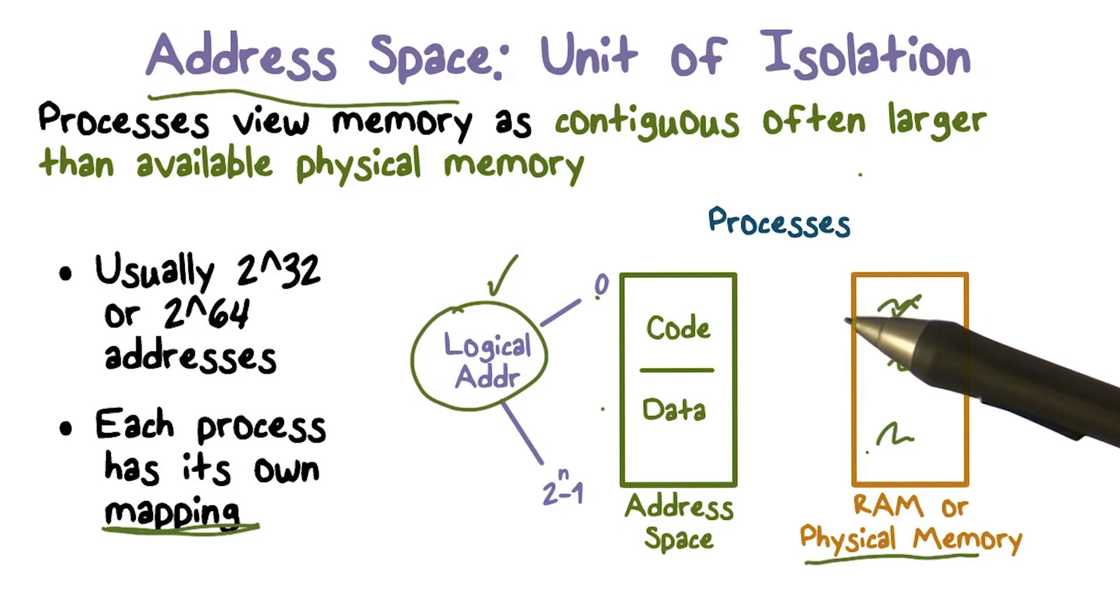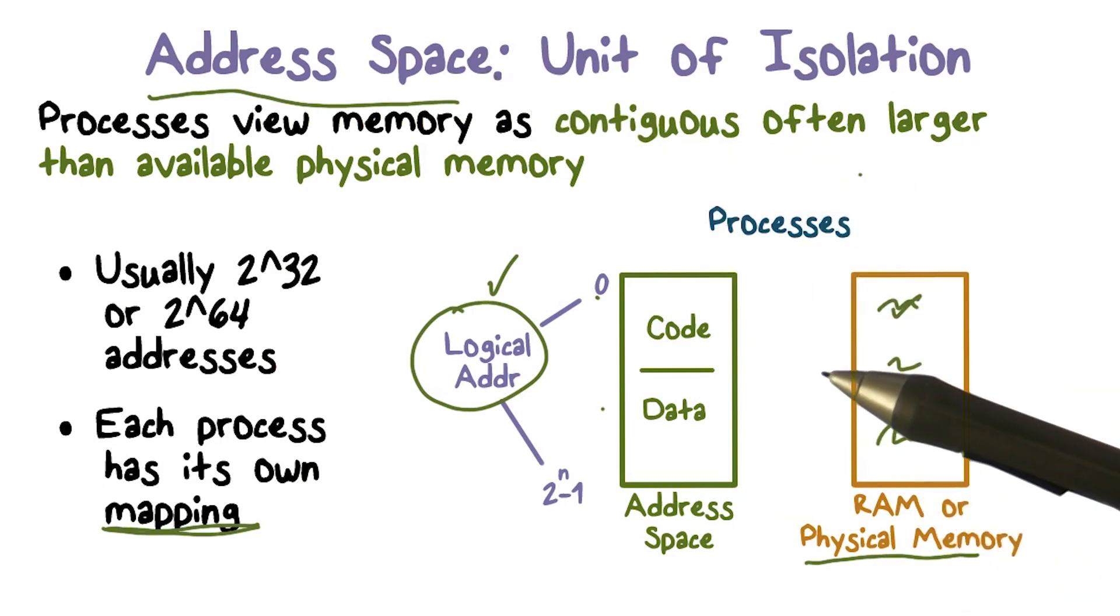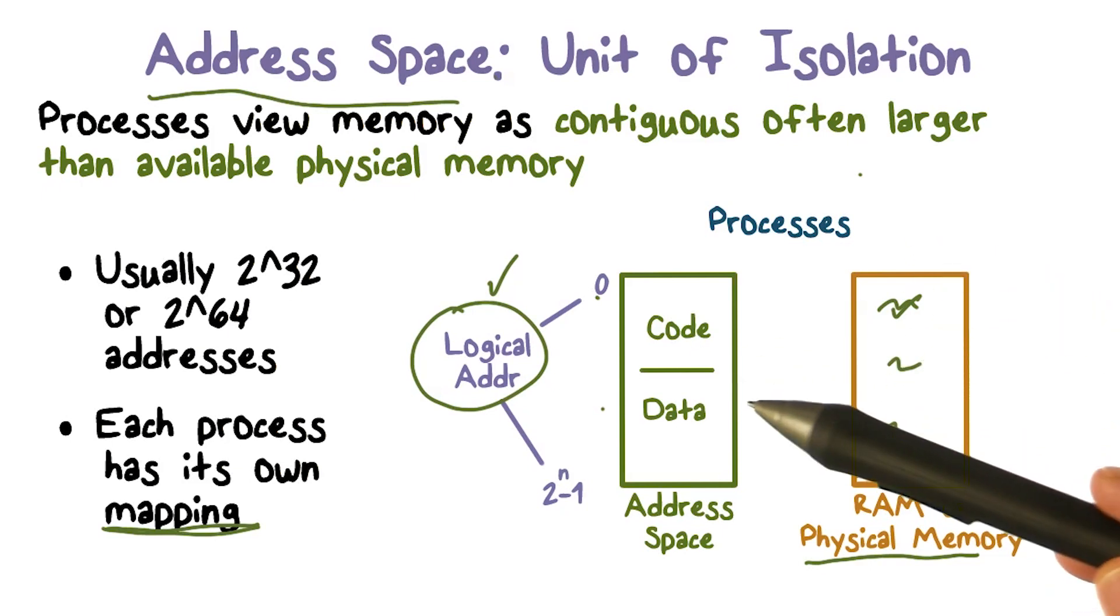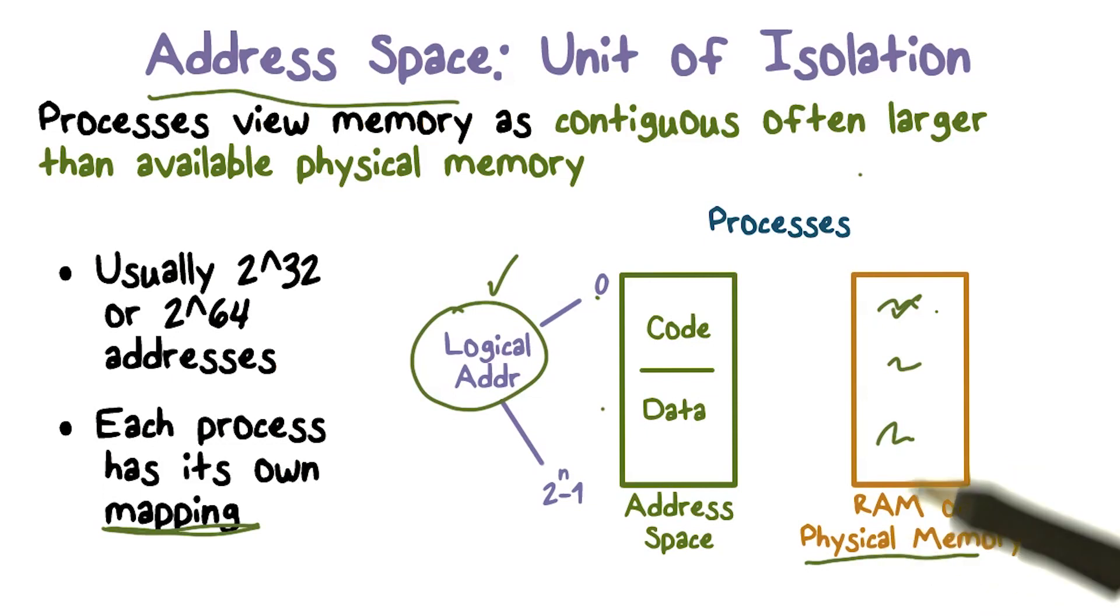So when you talk about isolation, think of an address space. That's what a process thinks it has. Implementing that address space by storing pieces of it in different parts of memory, and then making sure that a process can only go to physical memory that belongs to it. And that's how we get this isolation. So one of the things we want to do is understand how exactly does it work.